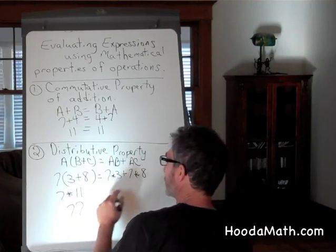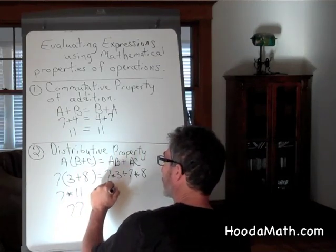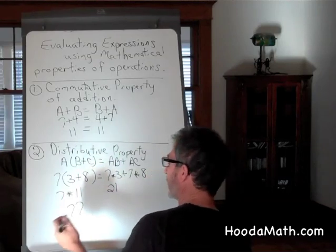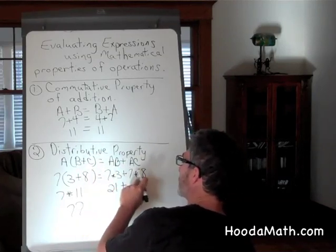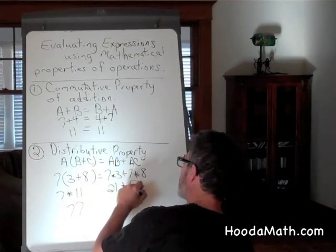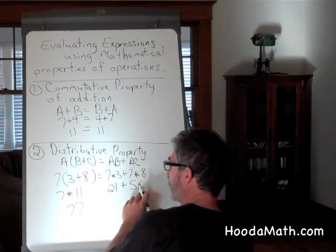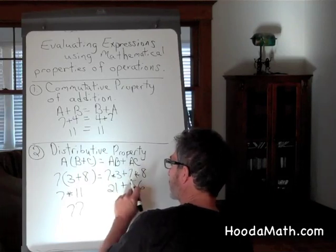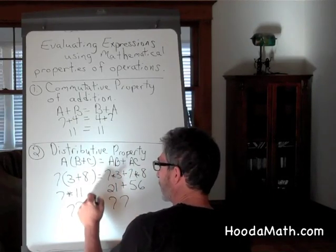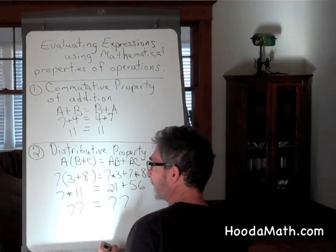7 times 3 equals 21. We multiply before we add. 7 times 8 equals 56. 21 plus 56 equals... 1 plus 6 is 7, 2 plus 5 is 7. So that is correct.